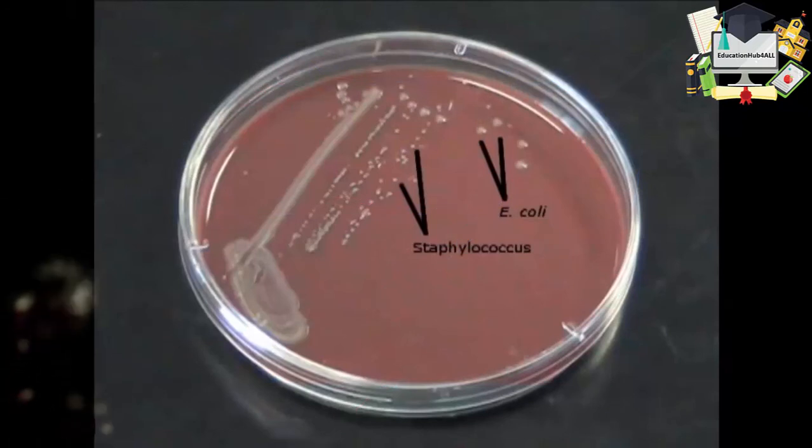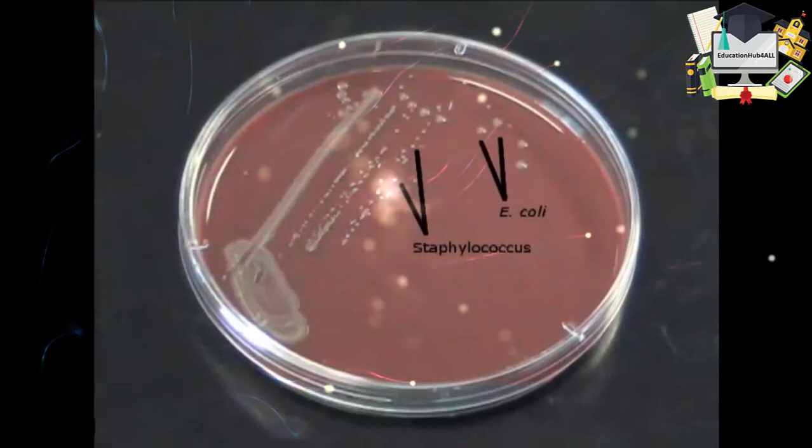On this plate, you can see the small off-white colonies of Staphylococcus and the larger smooth colonies of E. coli.